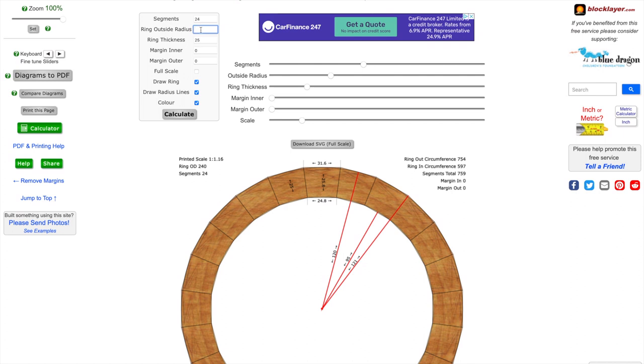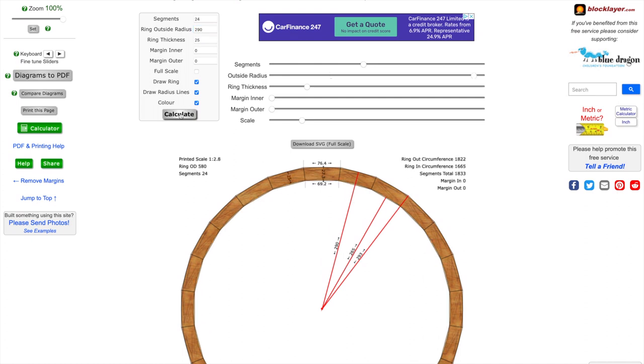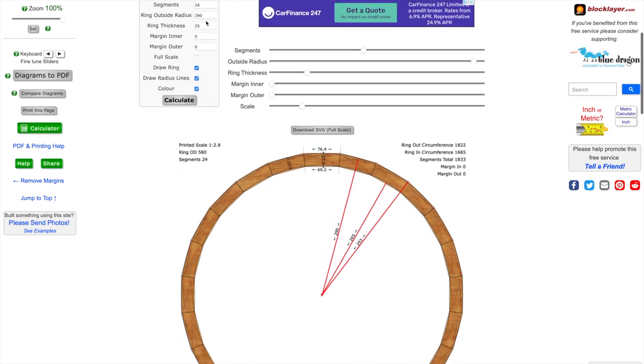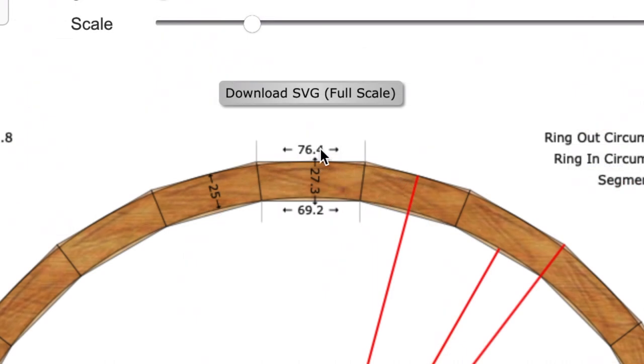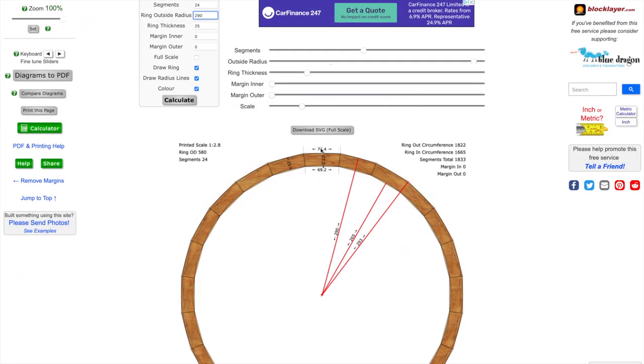So what I'm going to do is put in 290 millimeters and click calculate. This is 10 times what the measurement is, but it will only let you do values above 50 so I can't put 29 in. But what we've got here is 76.4, and if we just move the decimal place over so we've got 7.64, that's my segmented edge length for the bottom ring. So I'm just going to write that on my piece of paper, and then I'm going to repeat this process for the rest of them.